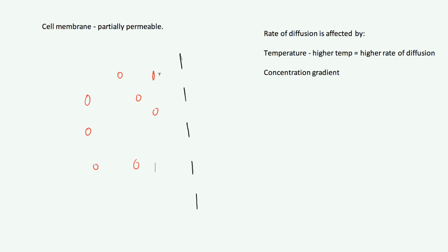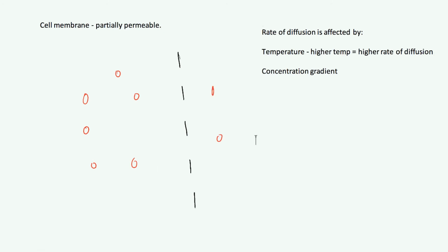Let me show you a scenario where there's a smaller concentration gradient. Let's say you've got six on the left-hand side and two on the right — you definitely still have a concentration gradient. If one moves across, then they're almost the same: five to three. One might go this way, one might go that way, but overall the net effect is you'll end up with four on each side. But that takes longer just because there isn't so much of a concentration gradient — the net movement is still to the right-hand side, but the difference is less drastic.